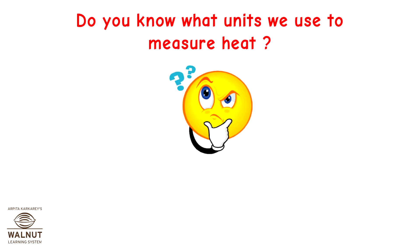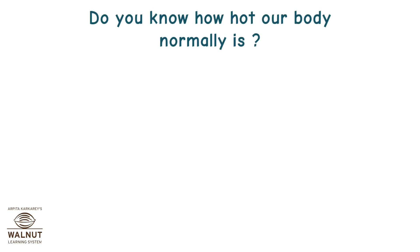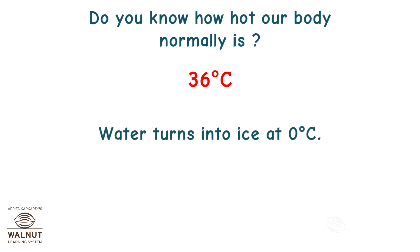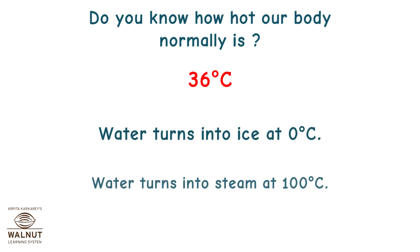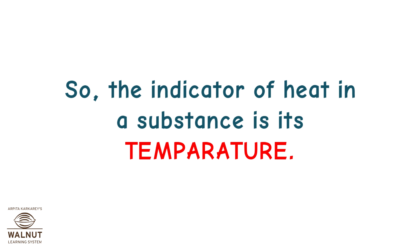Do you know what units we use to measure heat? Heat is measured in degrees Celsius. Do you know how hot our body normally is? 36 degrees Celsius. Water turns into ice at 0 degrees Celsius. Water turns into steam at 100 degrees Celsius. So the indicator of heat in a substance is its temperature.